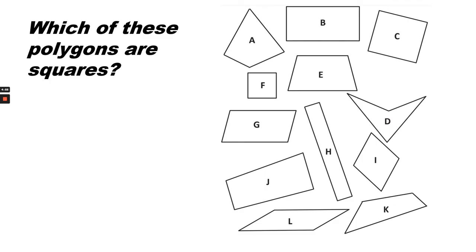Which of these polygons are squares? Answer. C and F are squares because they have four equal sides and four right angles.